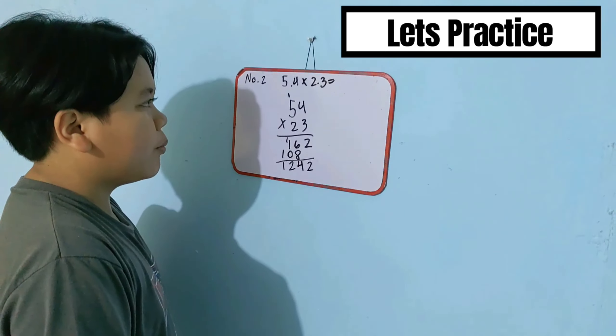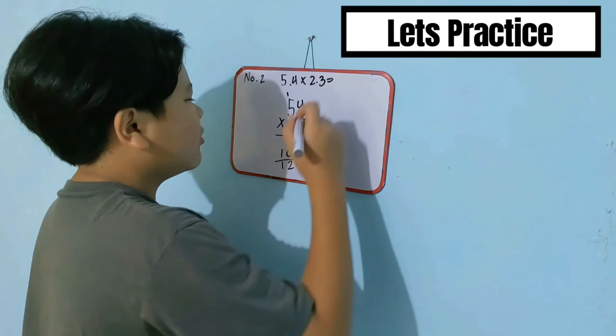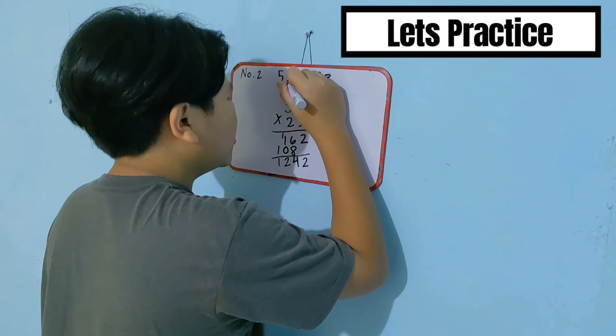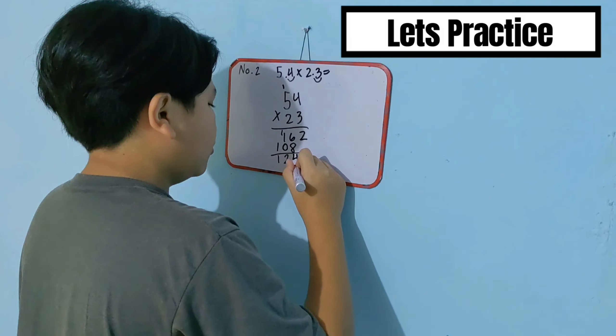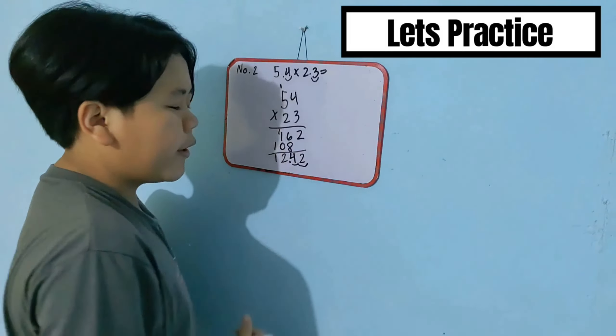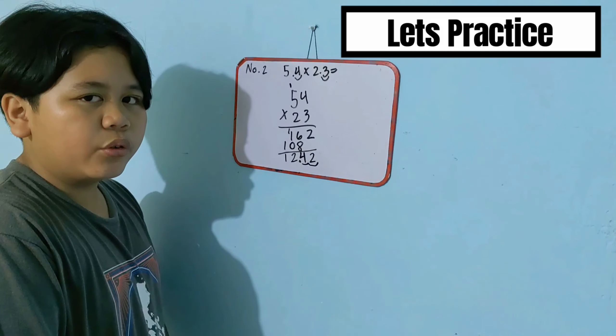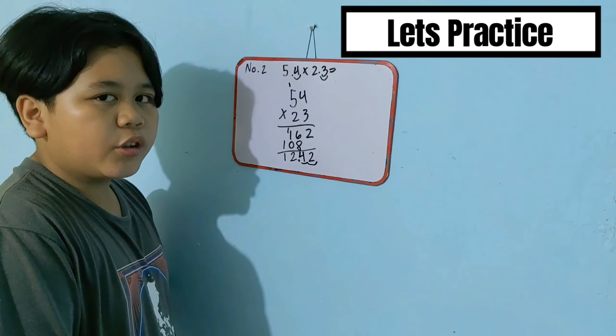Then, go back to the original number and count the digits. 1, 2. 1, 2. The final answer is 12.42, or 12 and 42 hundredths.